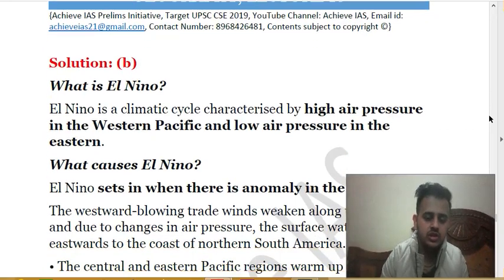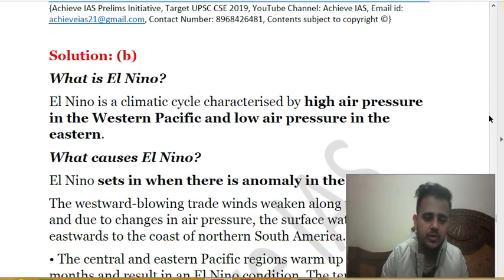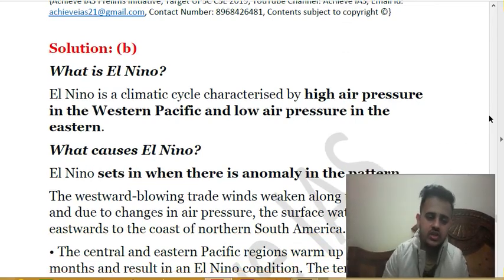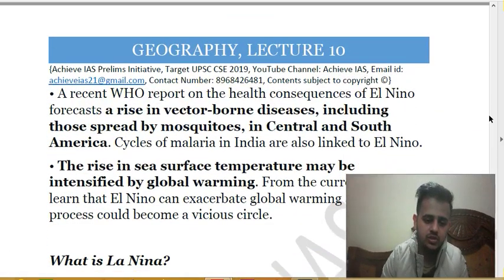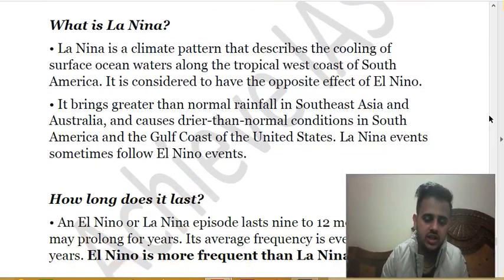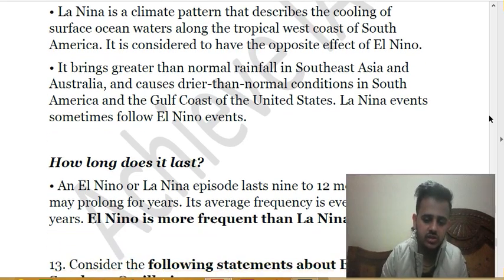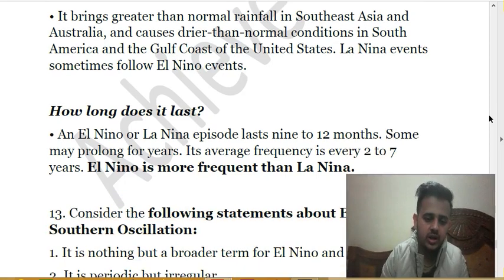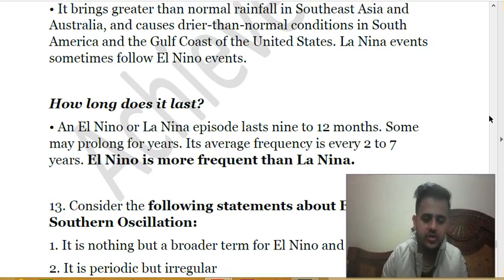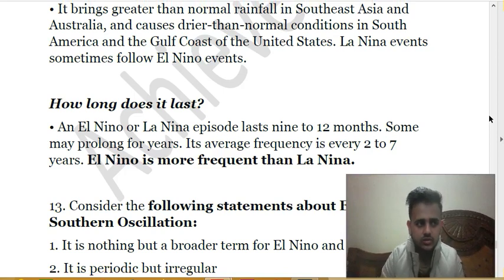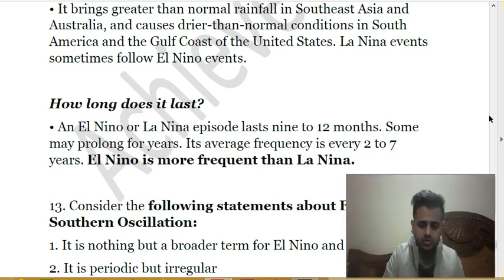El Niño is a climatic cycle characterized by high air pressure in the Western Pacific and lower pressure in the Eastern Pacific. La Niña is the opposite — extremely cold conditions in the Eastern Pacific and extremely hot conditions in the Western Pacific. An El Niño or La Niña episode typically lasts nine to twelve months and is not a permanent phenomenon.